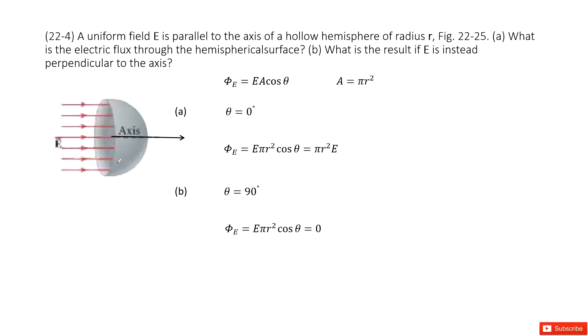You can see as the definition, the electric flux is EA cosine theta. Agree? Yes. E is the electric field. The next one is A.